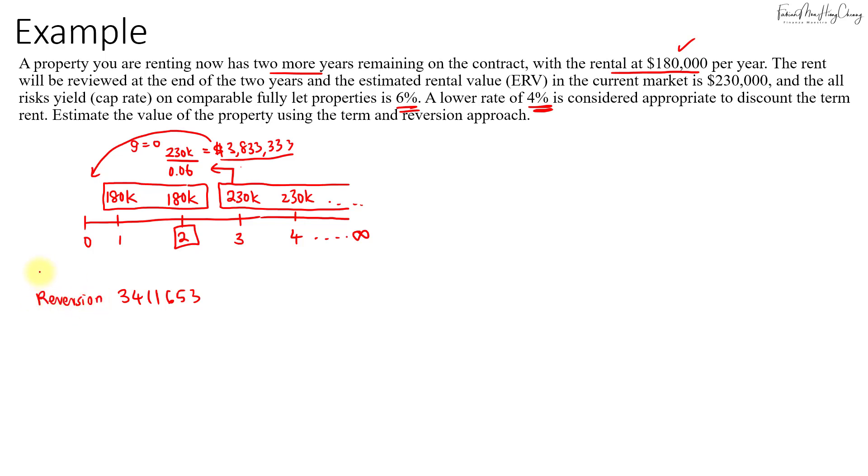And then the PV of the current term, or the term contract, which is $180,000 here. We can PV this as well.